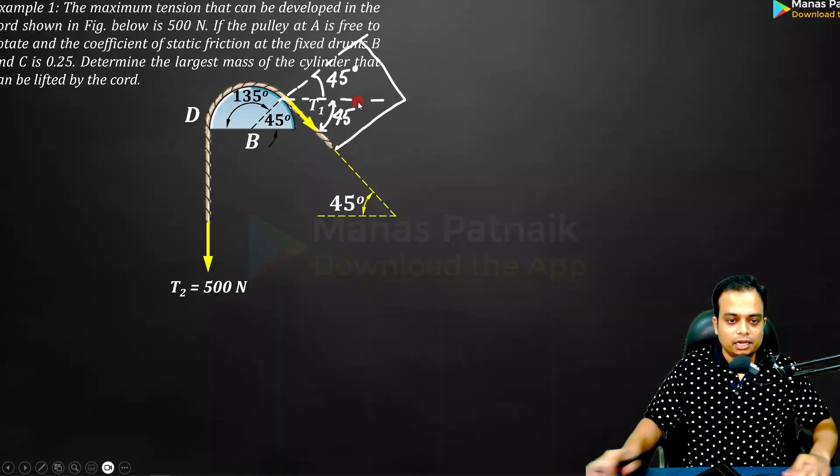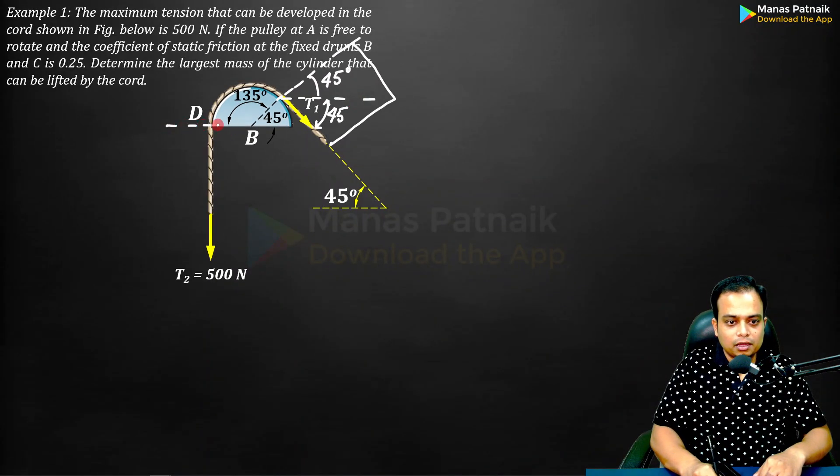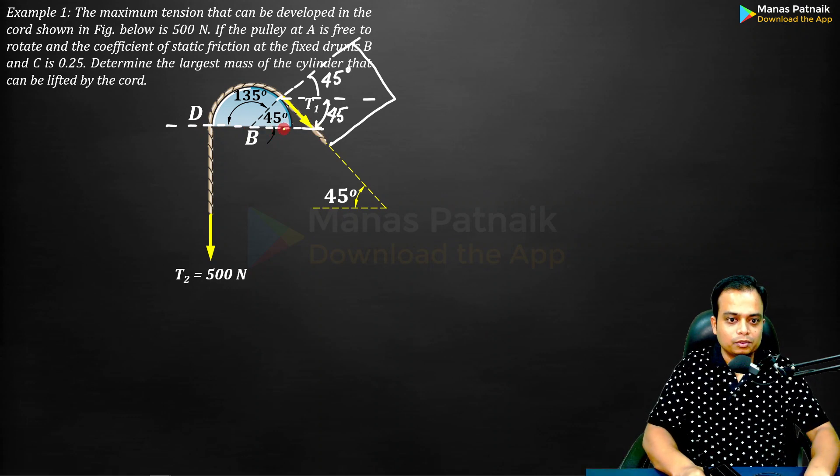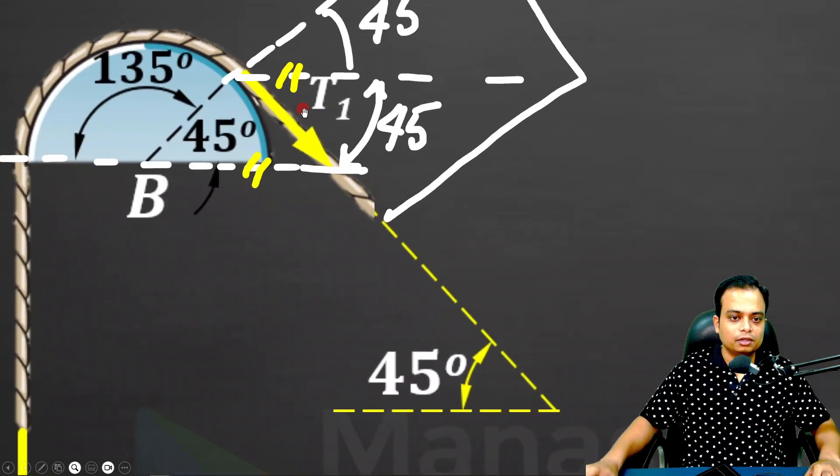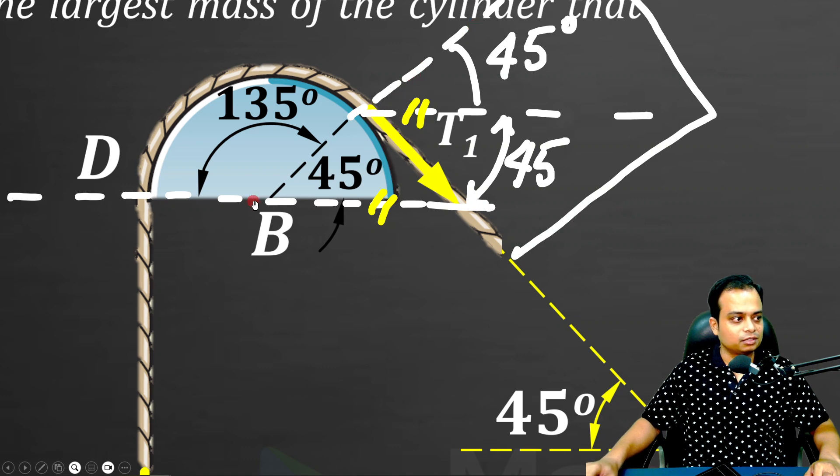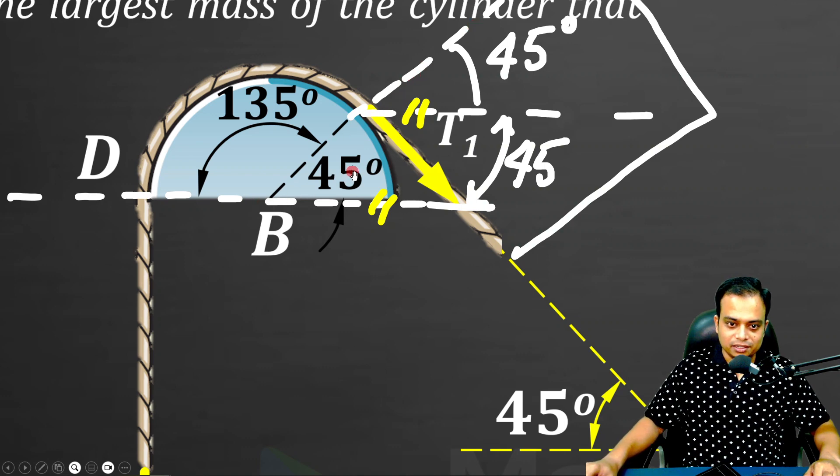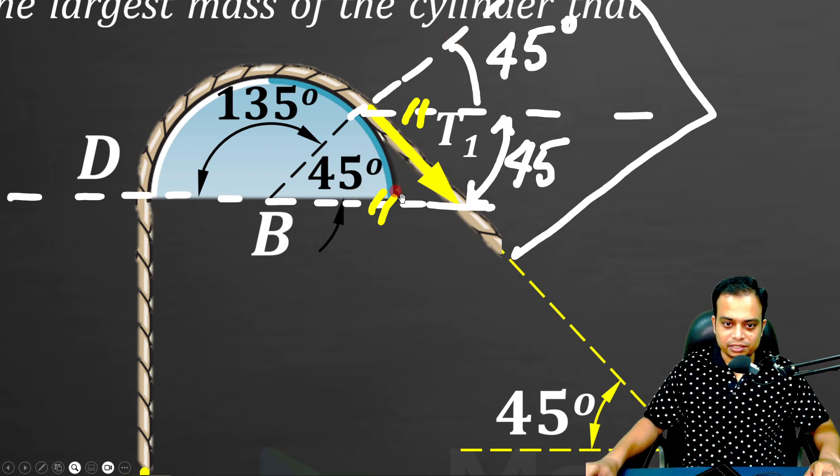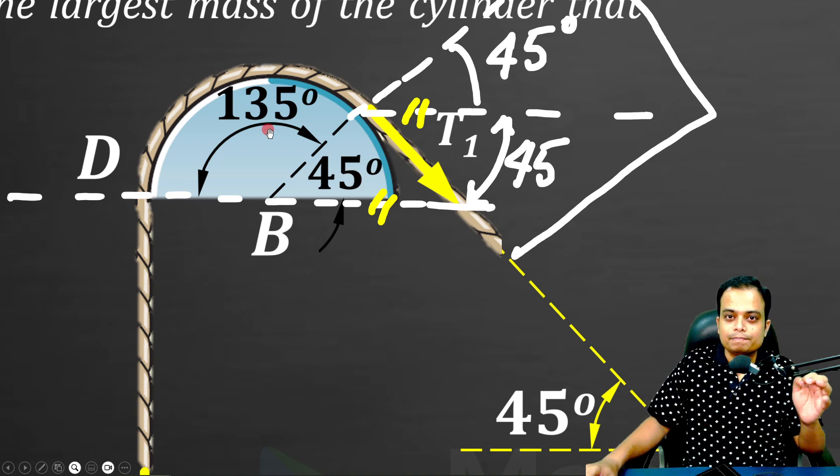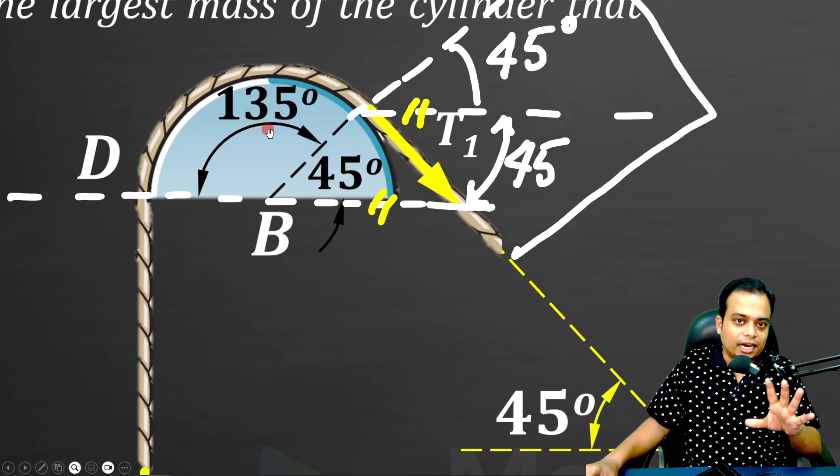Let me draw one more line. We've got two parallel lines and this happens to be a transversal. If this is 45 degrees, this also has got to be 45 degrees. So this totality is 180, and 180 minus 45 will give you 135. 135 is actually the angle of contact which is very important - beta.